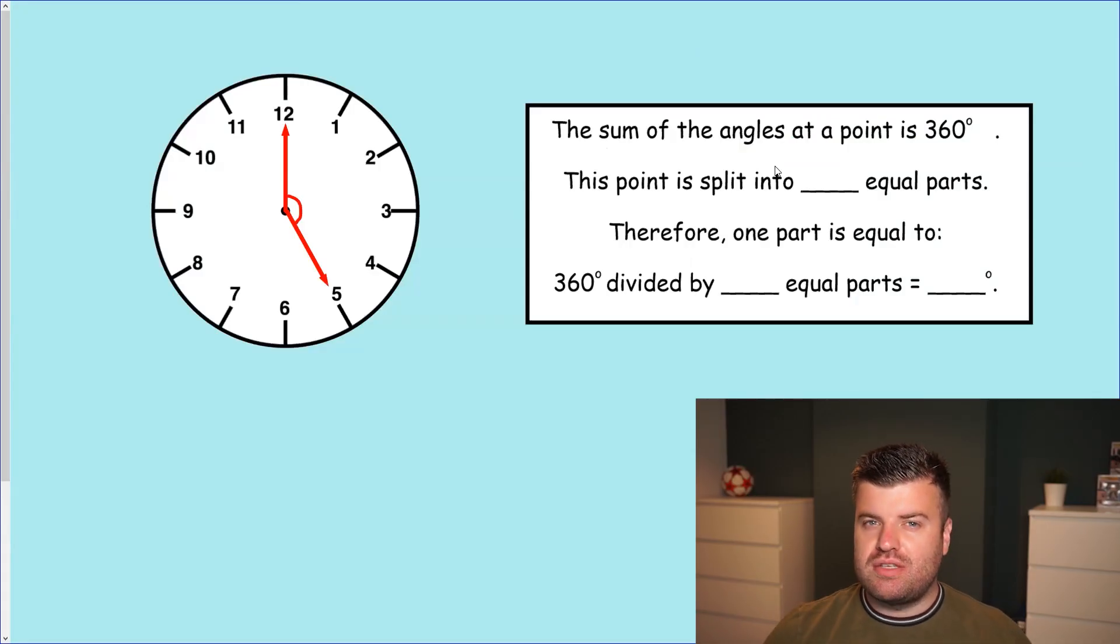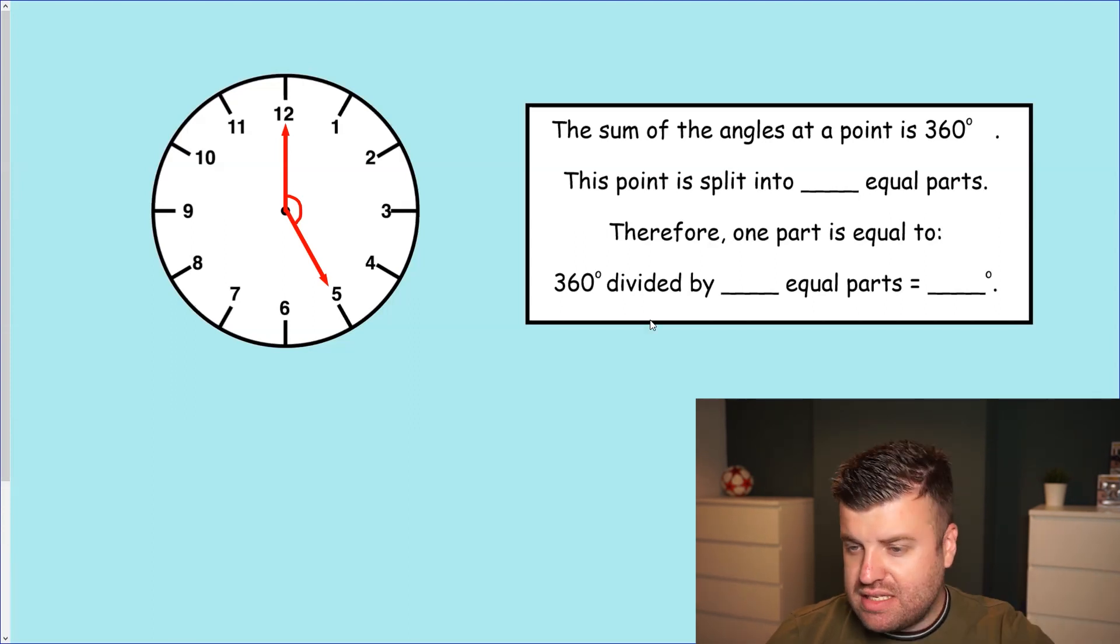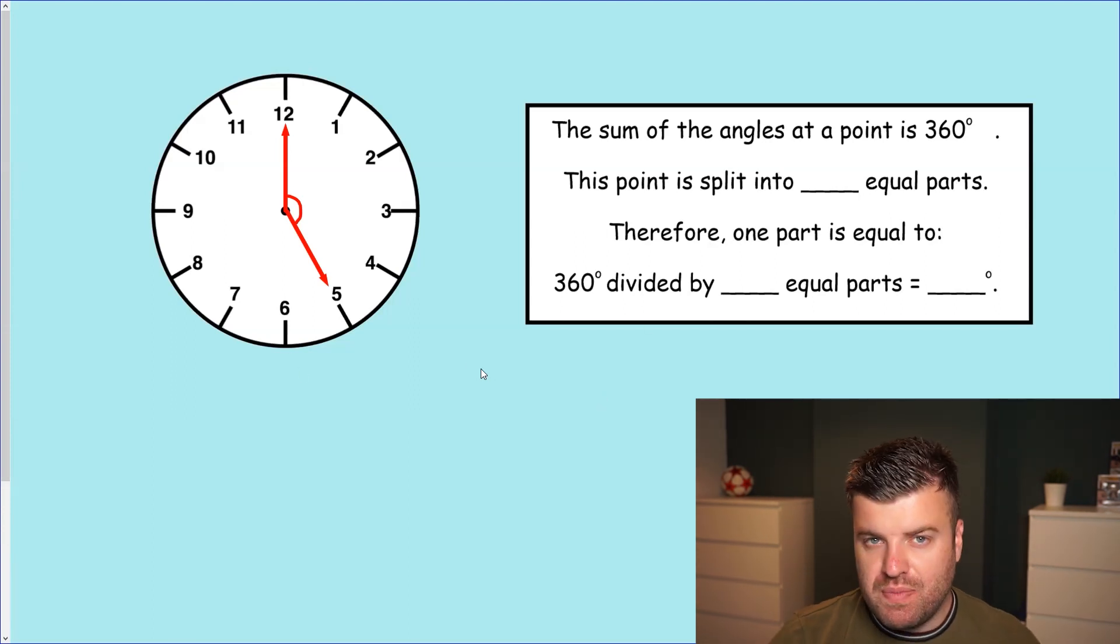So here we have an example of what this question might look like. They're going to give you a turn with a point in the middle. It might be a shape, it might be a clock face, as it is in this question here. And it will ask you to calculate the angle between two lines or two points around that turn. Now look at this example here. We can see it's five o'clock. The question might say, what is the smaller angle between the two hands of this clock?